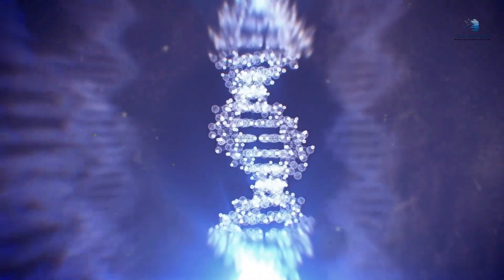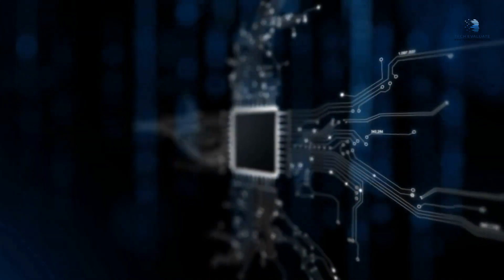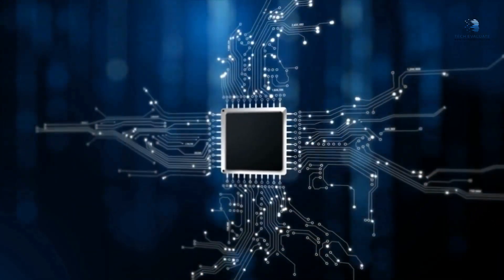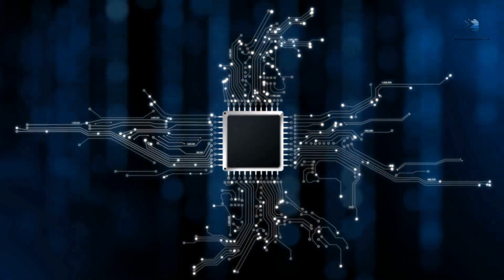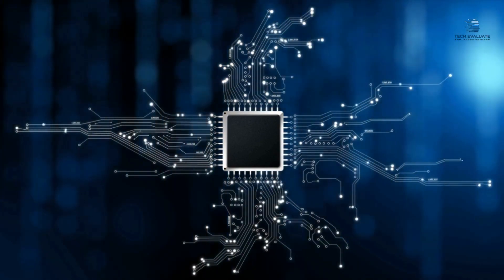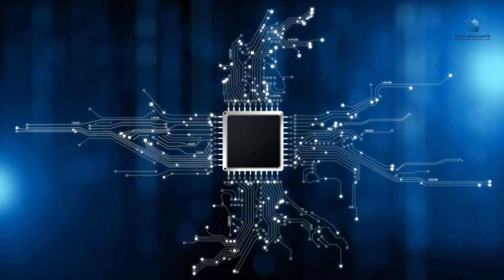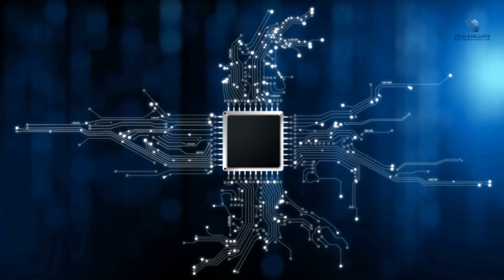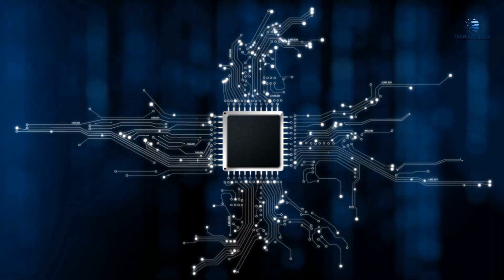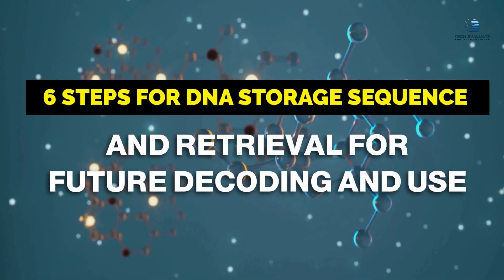The silicon chip industry uses a photolithographic approach to manufacture delicate circuitry and processors. Recent research by Harvard has successfully used this technique to produce usable DNA for storage. Six steps for DNA storage sequence and retrieval for future decoding and use: